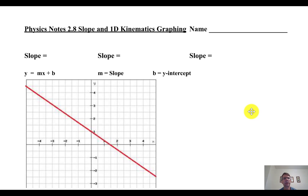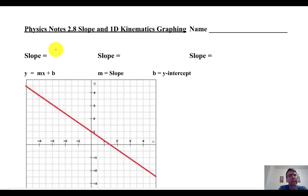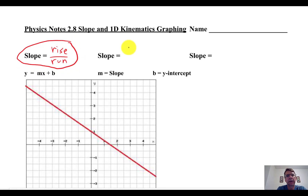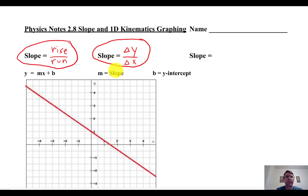Physics notes, unit section 2.8: slope and one-dimensional kinematics graphing. Quick review of slope — something you did in algebra class. Slope is, as you probably remember, defined as rise over run. Symbolically, slope is Delta Y — that's the rise, the vertical direction — over Delta X. We use the letter M for slope.